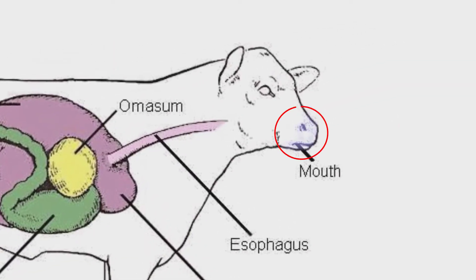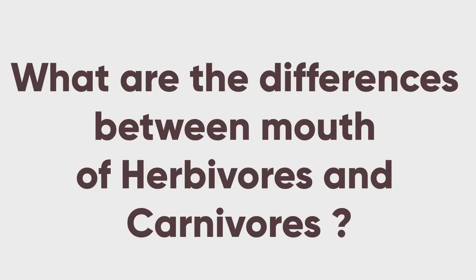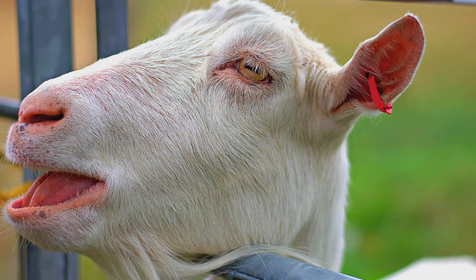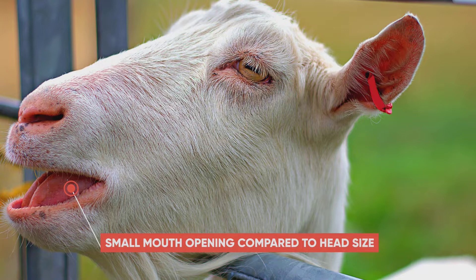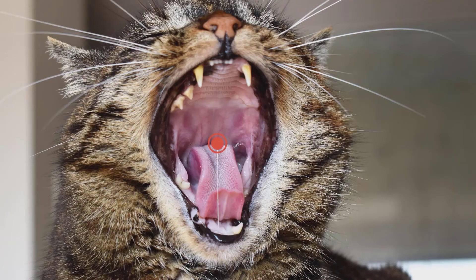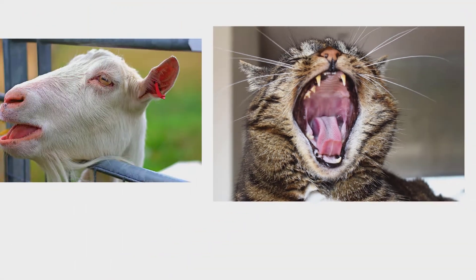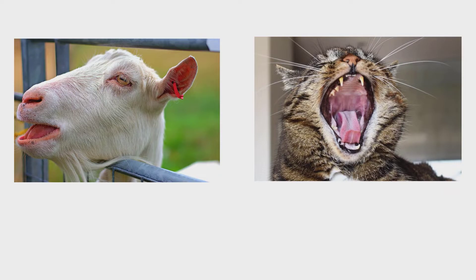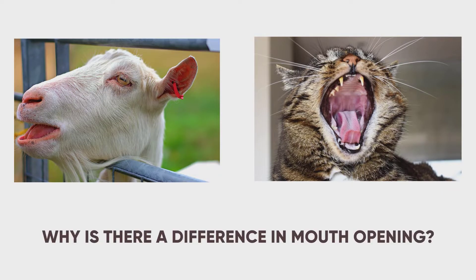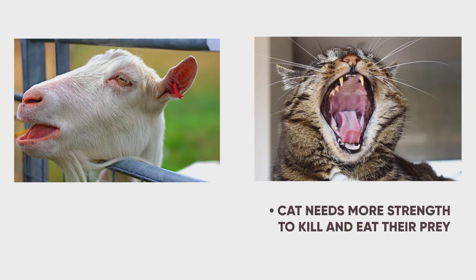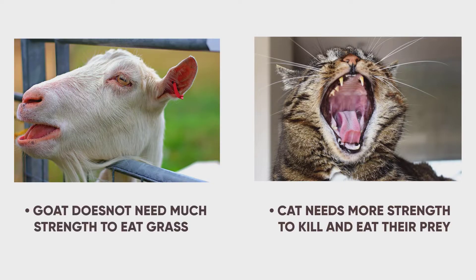The first organ of the digestive system is the mouth. What are the differences between the mouth of herbivores and carnivores? A goat has a relatively small mouth opening in relation to their head size, whereas a cat has a wider mouth opening in relation to their head size. Can you notice the difference in this picture? Cat needs more force while killing prey and breaking the meat apart, whereas a goat does not need that much strength in chewing grass or leaves.